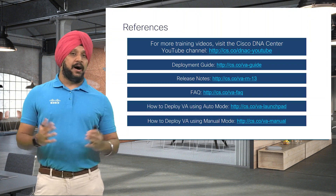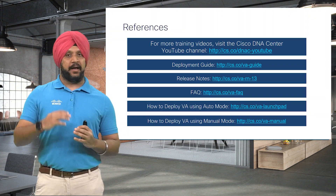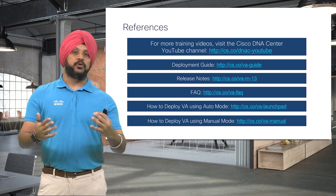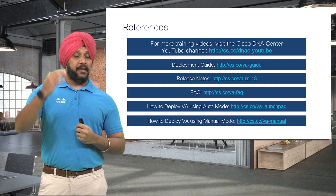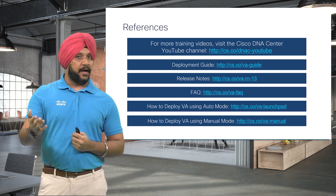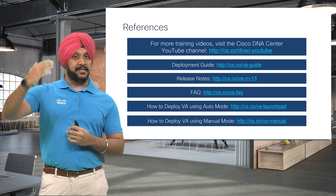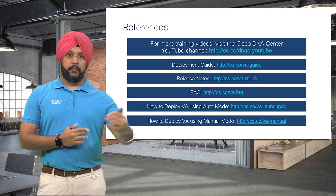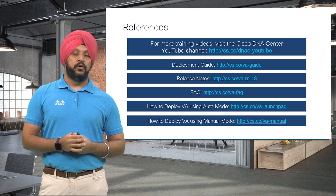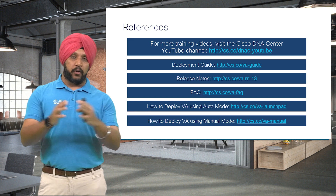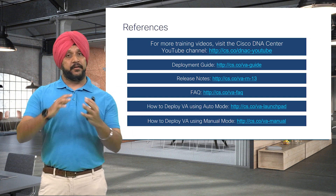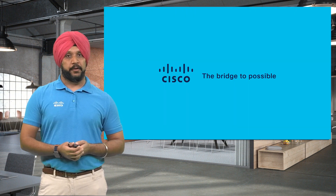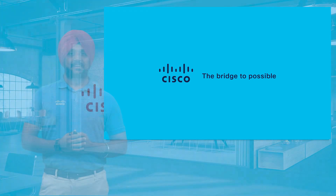Now you've seen how easy it is to install Launchpad — either through the container or the hosted version that Cisco provides — and all the benefits Launchpad brings for installing Catalyst Center on AWS. We have provided references including our YouTube channel with more videos, deployment guides for creating Catalyst Center on AWS, release notes, FAQs, and next videos showing how to deploy Catalyst Center end-to-end from the Launchpad application or through manual mode using CloudFormation templates. Thank you so much and keep learning.